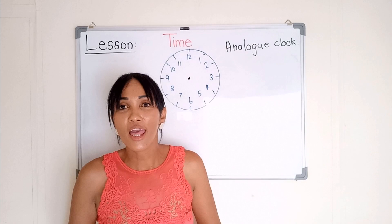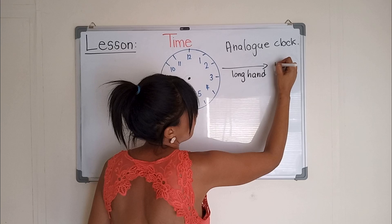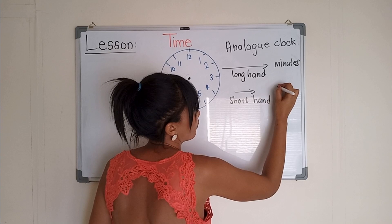Now before we can identify the hour in the day, there are two hands in the clock that we use. We have a long hand, and the long hand is for our minutes. We have the short hand, which is for our hour.